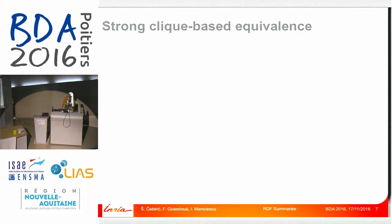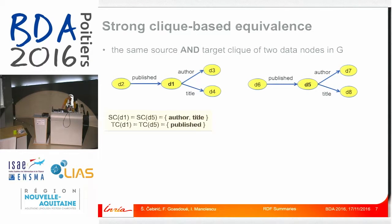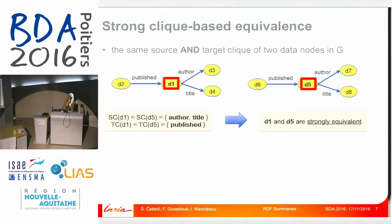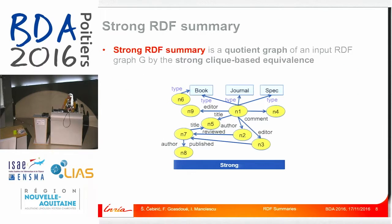We have strong and weak clique-based equivalence. The strong clique-based equivalence says that two data nodes in G are equivalent if they have the same source clique and the same target clique. So in this example, if D1 and D5 both have an author, are both sources of title, and both are targets of published, we say they are strongly equivalent because they have the same source and the same target clique. We then instantiate a strong RDF summary as a quotient of the input graph G by the strong clique-based equivalence, and for our running example this is its strong summary.